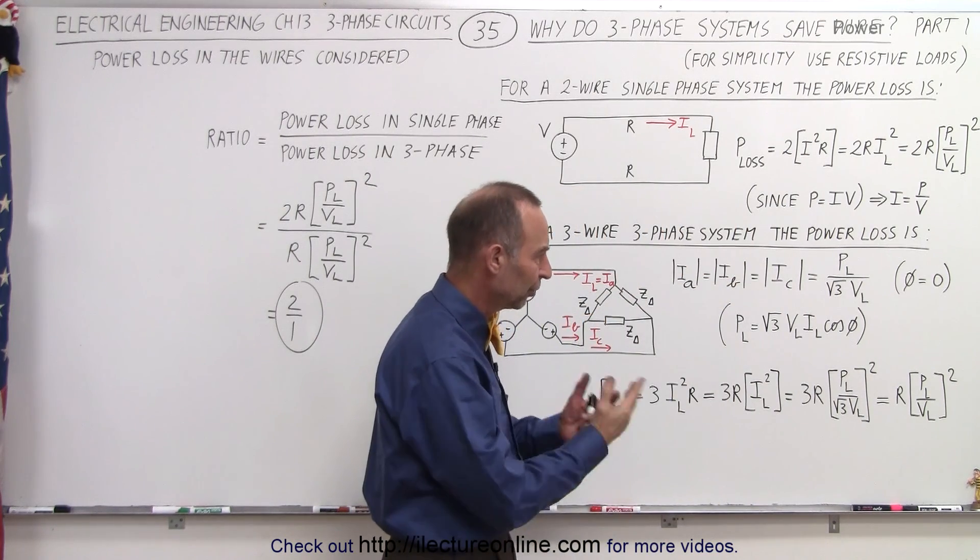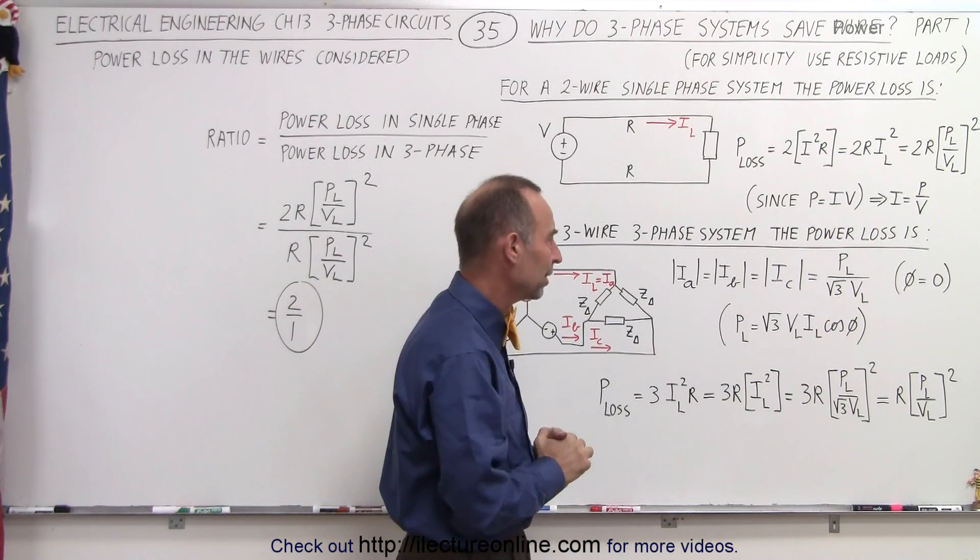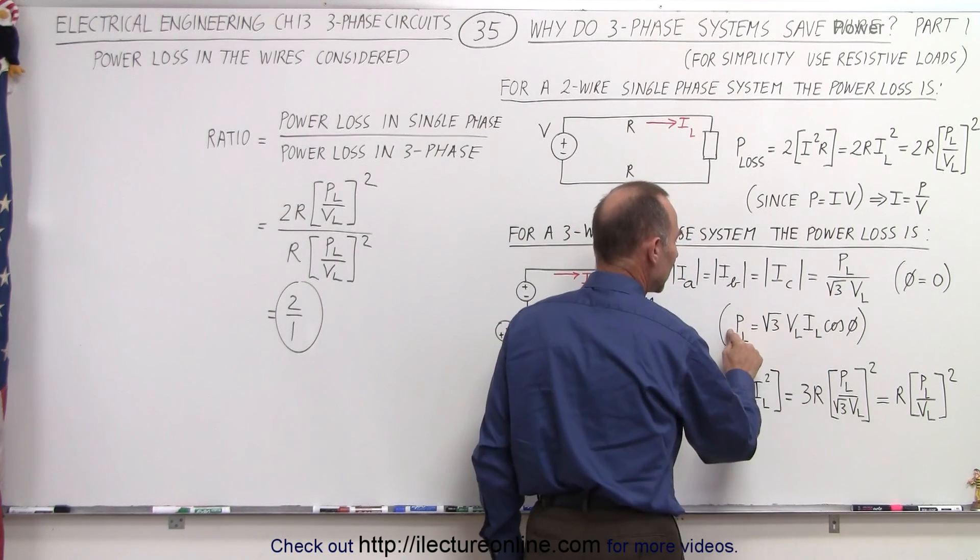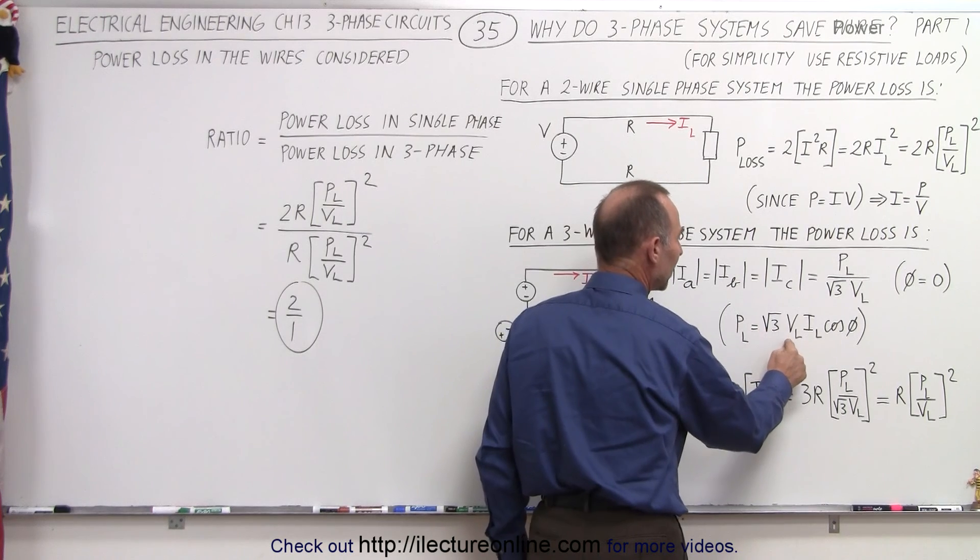Of course, in this case, the phase angle is zero, so the cosine of zero is one. We can ignore that. If we then solve this for I, you can then see that I is equal to P divided by the square root of three times V.